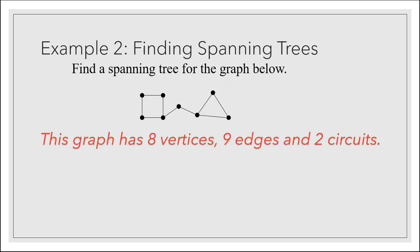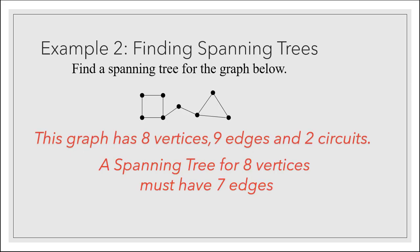Let's find a spanning tree for the graph below. The first thing that's useful to observe when you're trying to find spanning trees is the number of vertices, edges, and circuits. This graph has eight vertices, nine edges, and two circuits. A spanning tree for eight vertices must have seven edges, not nine.